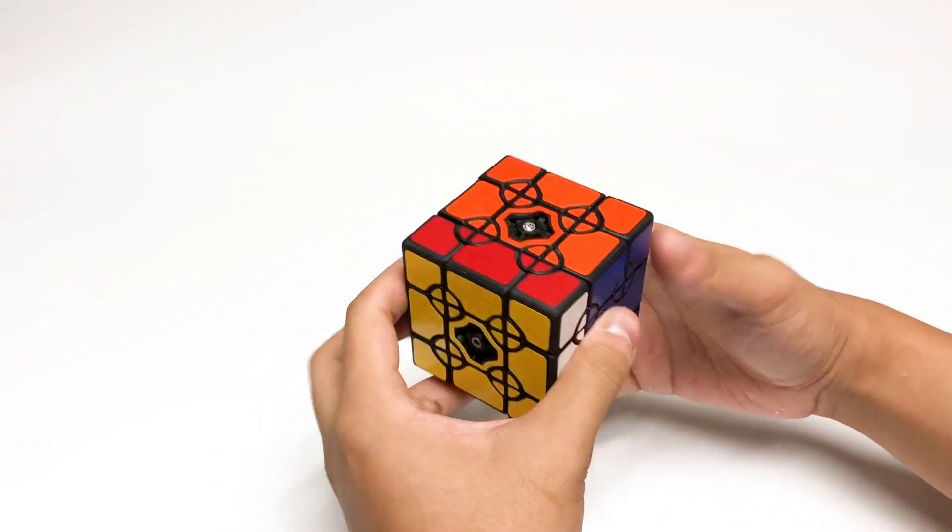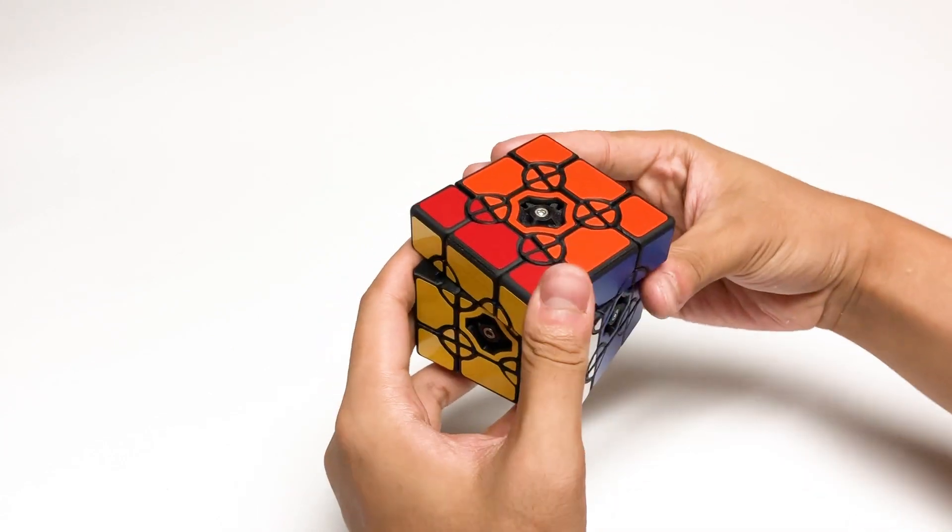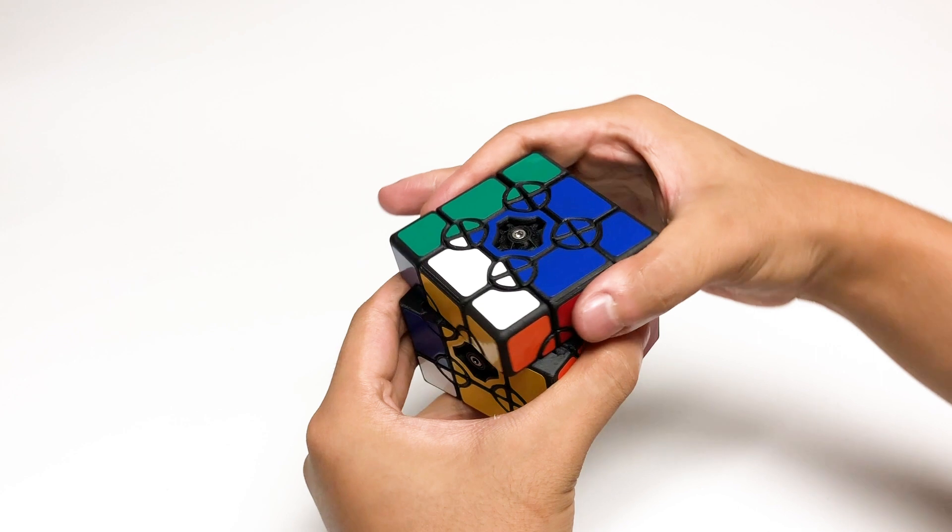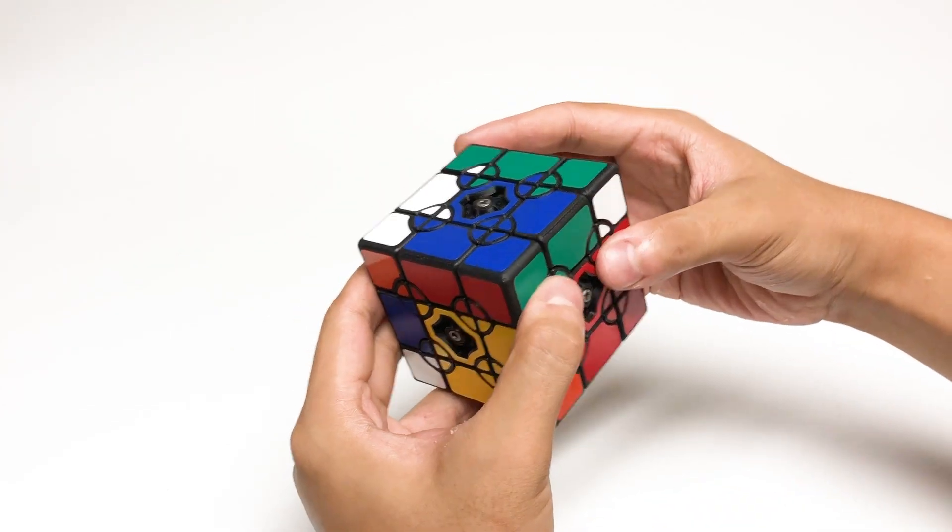When I rotate an adjacent face, you will see the small circle pieces start to scramble in a quite confusing manner.